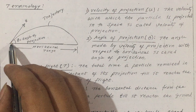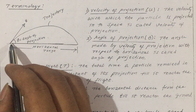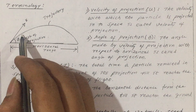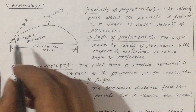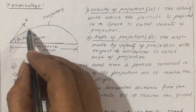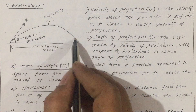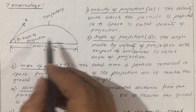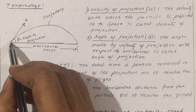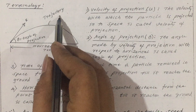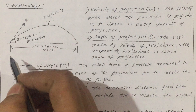Here I am throwing a particle into the space with some angle. So it will trace the path of the parabola. That path I am going to call as trajectory.